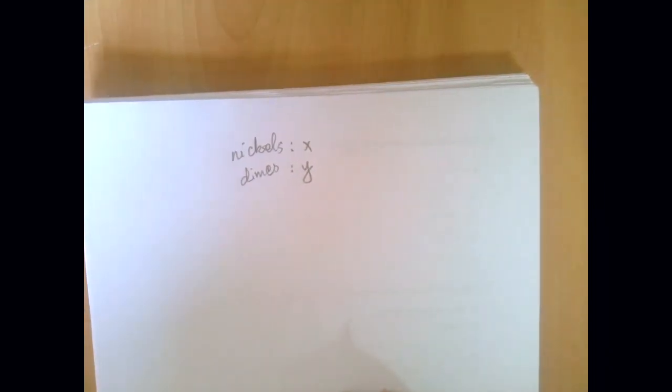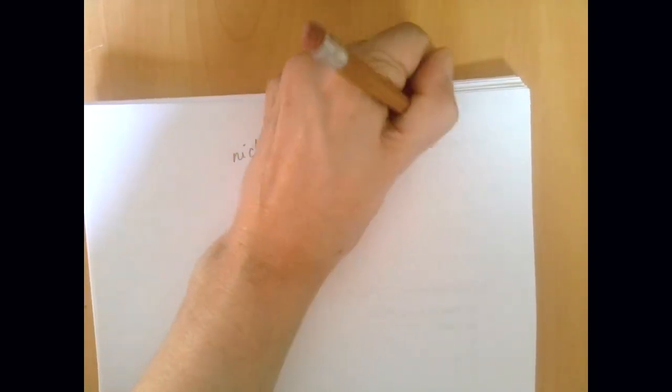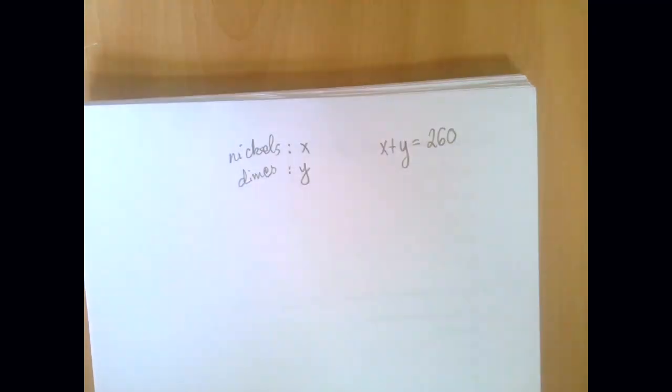then one easy equation is x plus y equals 260, because the problem states that altogether we have 260 coins.